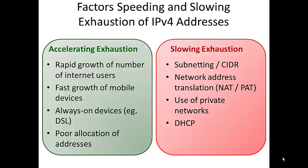Address exhaustion was the main reason for switching. Causes included rapid growth in Internet users, fast growth in unexpected mobile devices, always-on devices, and poor allocation of existing addresses. New technologies like subnetting, network address translation — where a private network connects to the Internet through just one IP address — and DHCP all helped slow down address consumption, but still the transition to IP version 6 is inevitable.